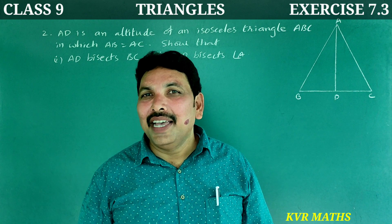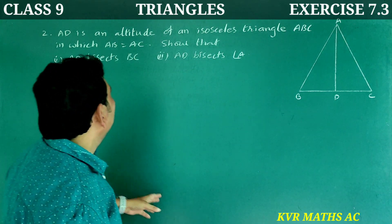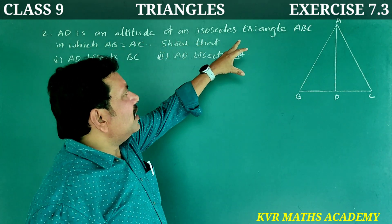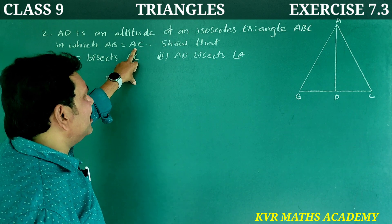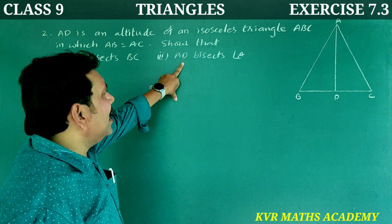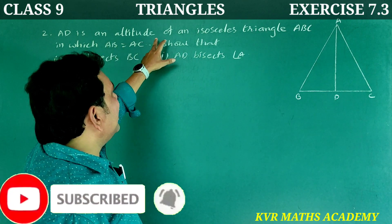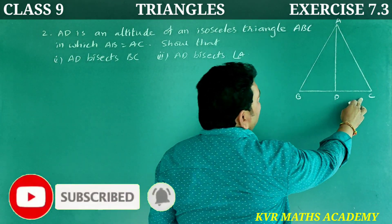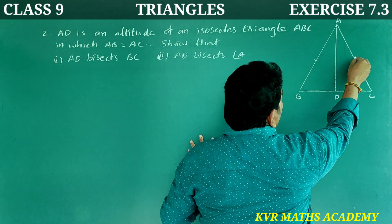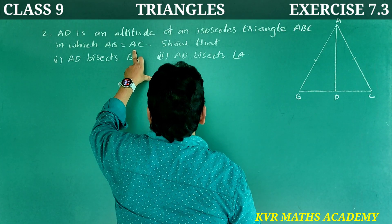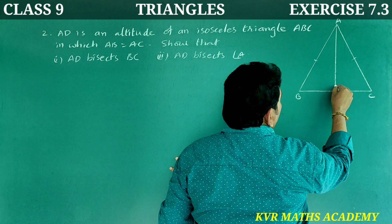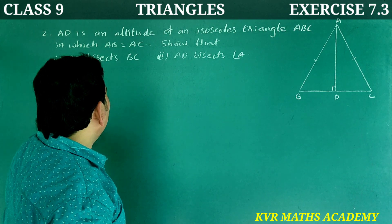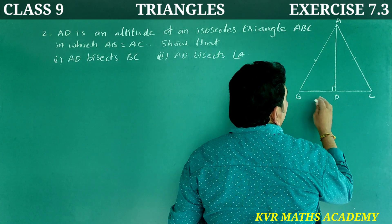Let's go through the second question. AD is an altitude of an isosceles triangle ABC in which AB is equal to AC. We need to show that AD bisects BC, and AD bisects angle A. AD is the altitude, so angle ADB is equal to angle ADC, which is equal to 90 degrees.